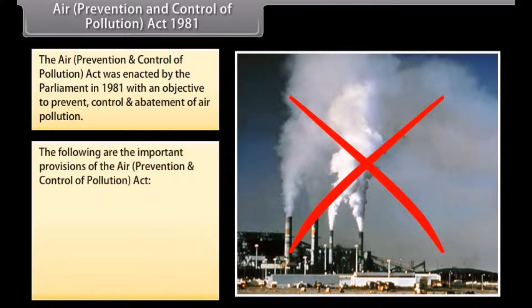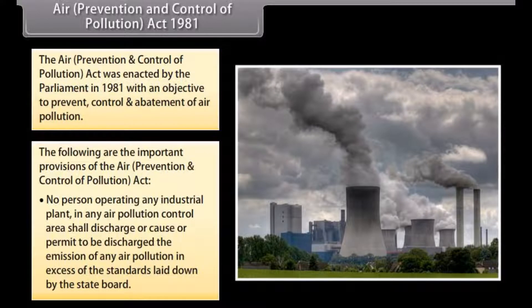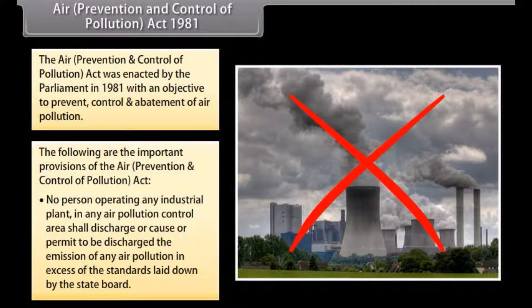The following are the important provisions of the Air Prevention and Control of Pollution Act. No person operating any industrial plant in any air pollution control area shall discharge or permit to be discharged the emission of any air pollutant in excess of the standards laid down by the State Board.